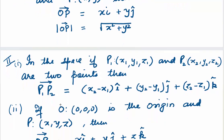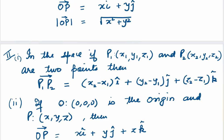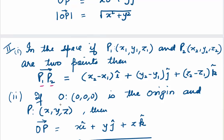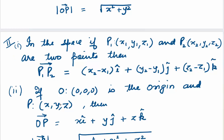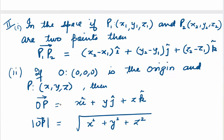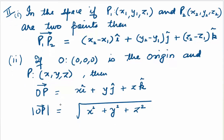Now in space, if we have two points P1 = (x1, y1, z1) and P2 = (x2, y2, z2), then the vector P1P2 is (x2−x1)i + (y2−y1)j + (z2−z1)k. If one of the points is the origin, then the vector OP = xi + yj + zk, since the difference is (x−0)i + (y−0)j + (z−0)k. The magnitude of this vector OP is √(x² + y² + z²).